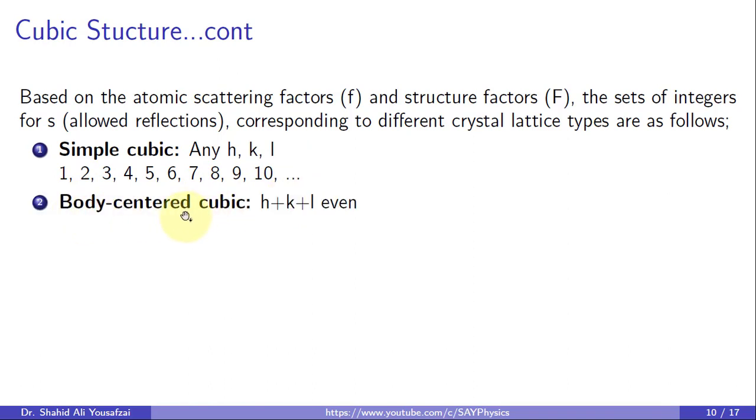For body-centered cubic, only those reflections are allowed for which the sum of Miller indices is an even number. For example, 2, 4, 6, 8, 10, 12, and so on.